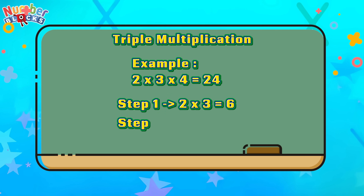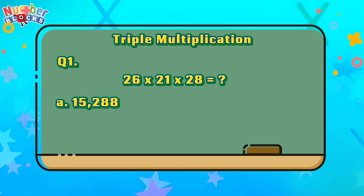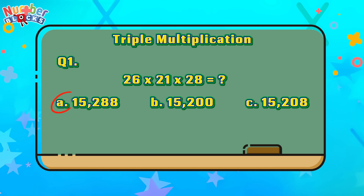And step 2, let's multiply it by the third number: 6 times 4 is equals to 24. Let's answer some questions. Question number 1: 26 times 21 times 28 is equals to. Is it letter A, 15,288? B, 15,200? Or C, 15,208? And the right answer is letter A, 15,288.